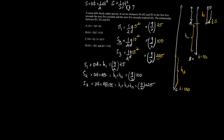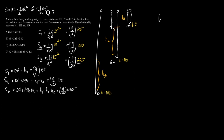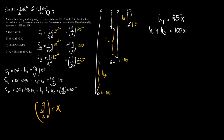Now it is just a linear equation. Let me write down the equations. I will consider g/2 as x. So h1 equals 25x, and h1 plus h2 equals 100x. From these two equations: 25x plus h2 equals 100x, so h2 equals 100x minus 25x, which equals 75x.